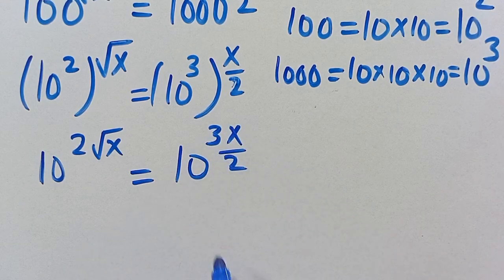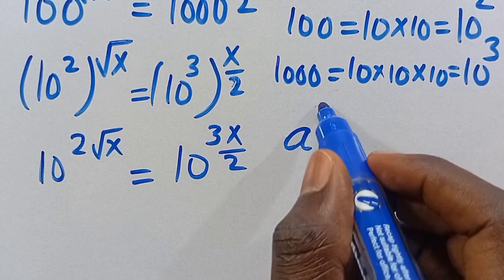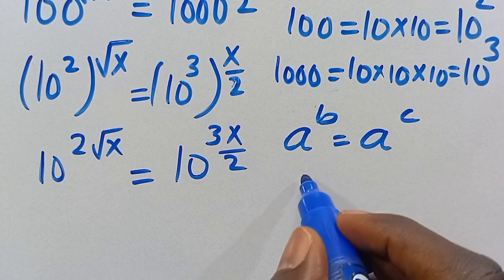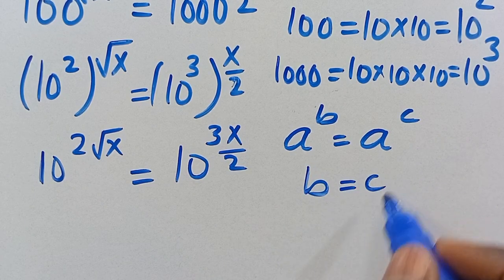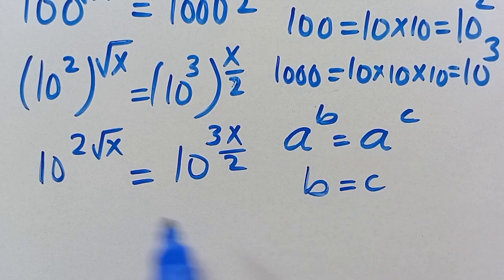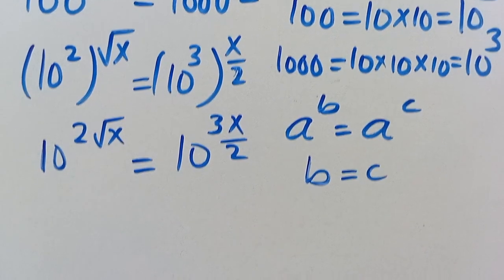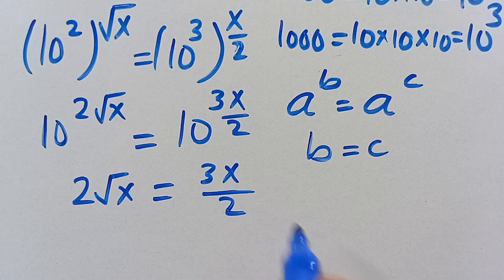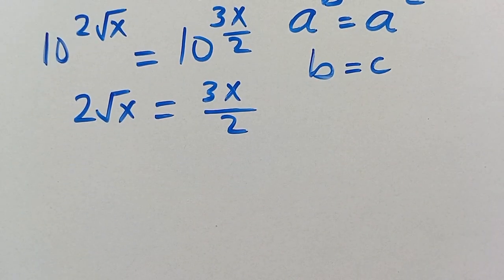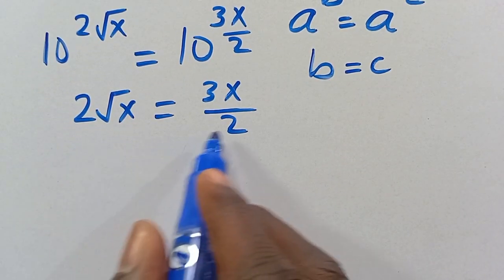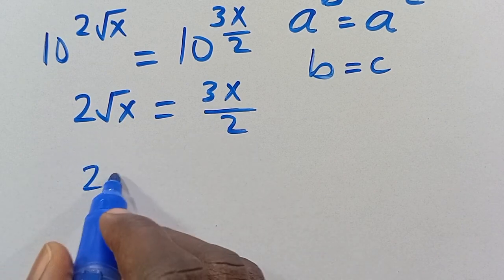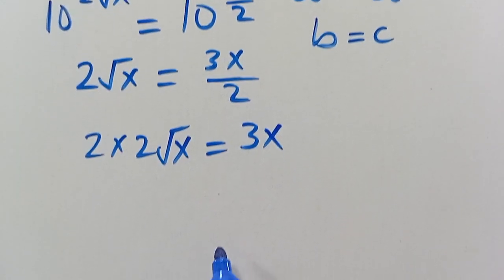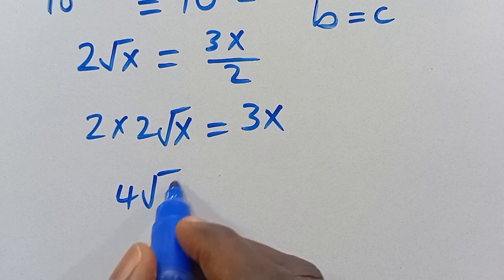Since both sides have the same base of 10, we can equate the exponents: when a^b = a^c, then b equals c. So we get 2√x = 3x/2. Cross multiplying gives us 4√x = 3x.